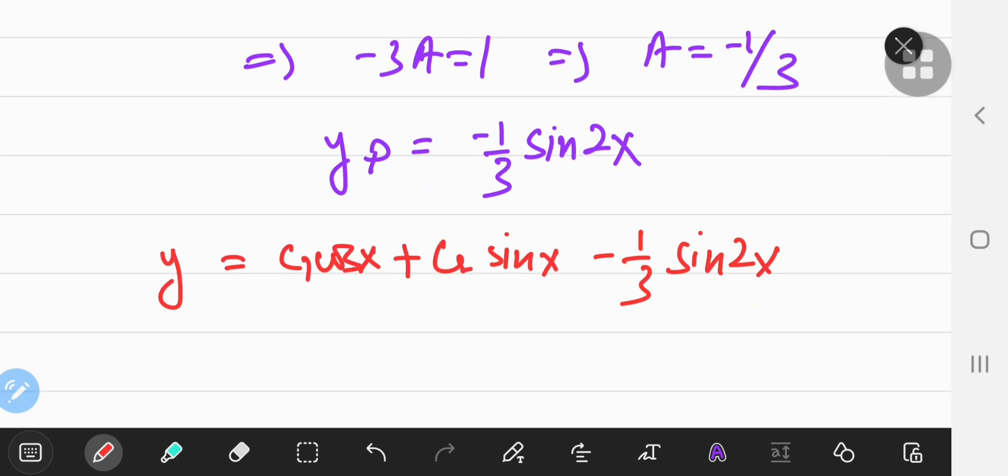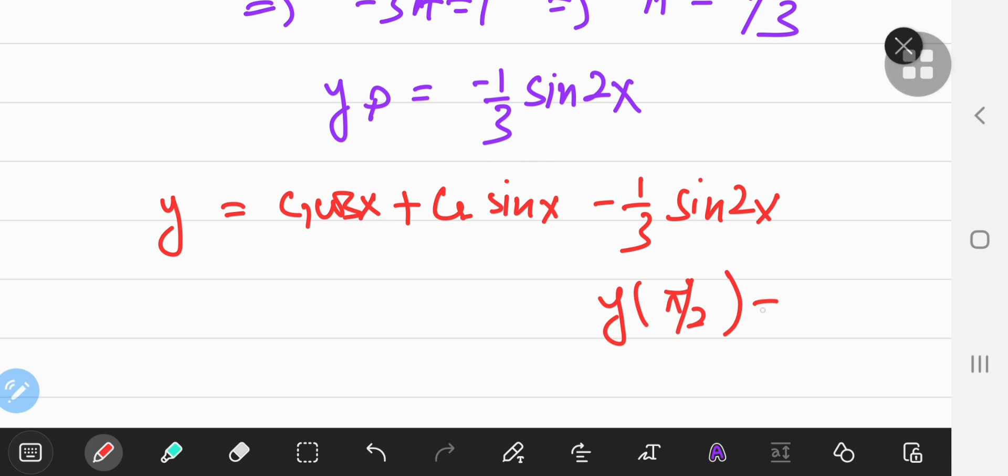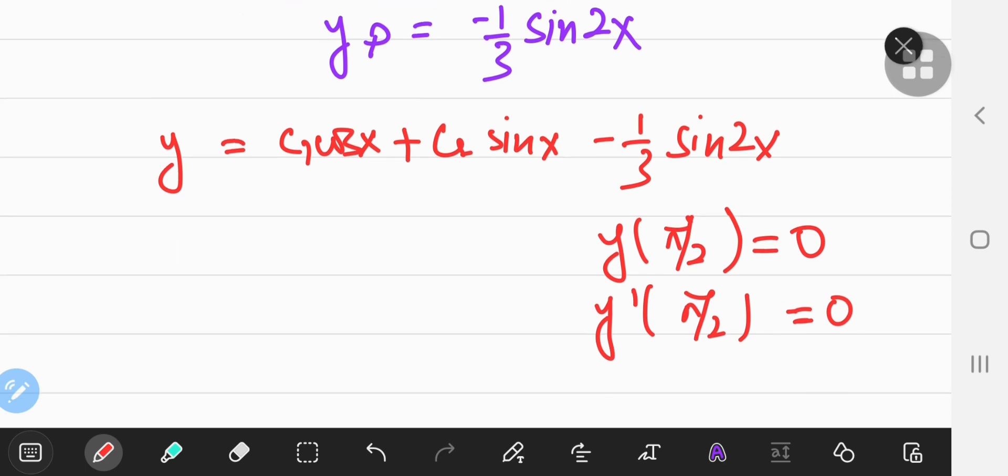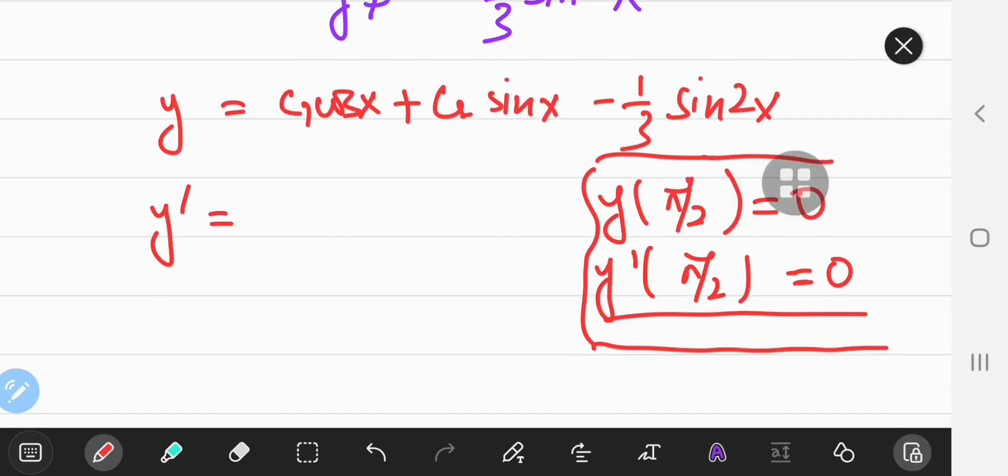Now all that's left to do is determine the constants c1 and c2. We can do that since we're given the initial conditions of y of pi by 2 equal to 0 and y prime pi by 2 equal to 0 as well. So I'm going to have to take the derivative of this y function here.